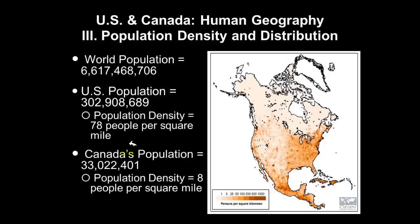Canada's population is right over 33 million, and the average population density of Canada is 8 people per square mile.